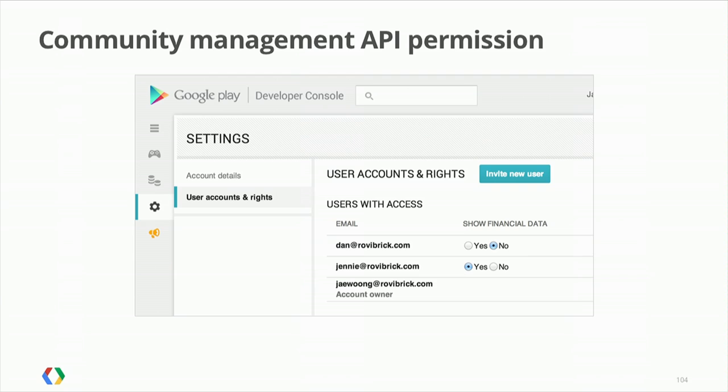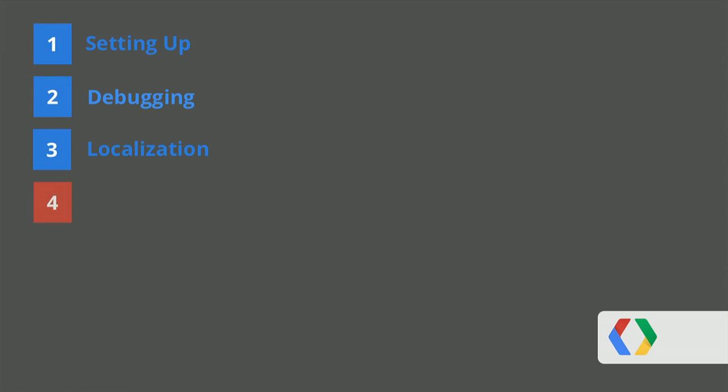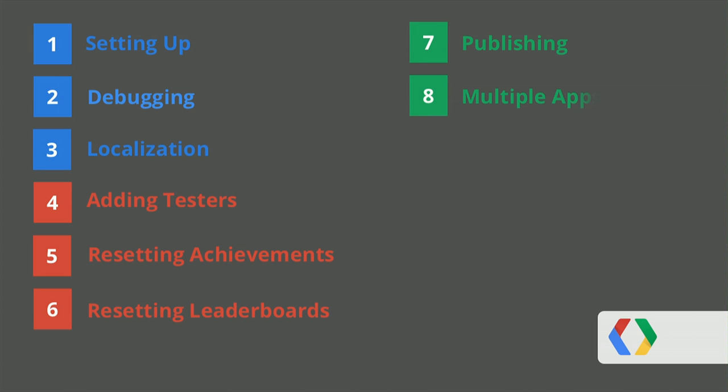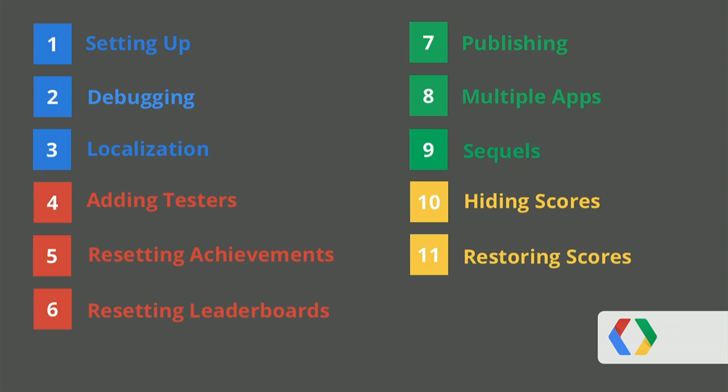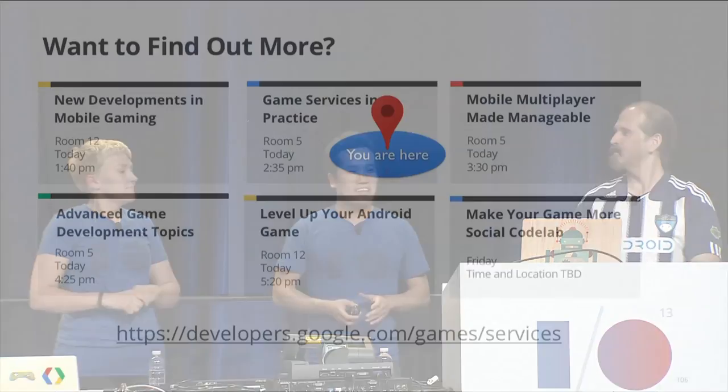So we've walked you through the development, test, and publishing cycle, and talked about how you manage your gamer community. You now have all the information to set up and publish your million-dollar game franchise. All the sample code is available at developers.google.com documentation for games. There are talks on game services coming up in this room, and we'll be in office hours in the Play Sandbox upstairs if you have questions. In that sandbox there are hands-on stations where you can play more than 16 of the partner games. Thank you for coming.